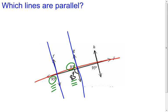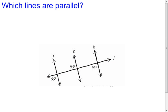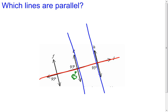Therefore I know f and g are not parallel, so I can rule that out. Starting over, I'll look at line g and line h with line j still as the transversal. I'll keep the 85-degree angle I already calculated. Looking at the corresponding angles for g and h — they're not congruent, so those two lines are not parallel either.